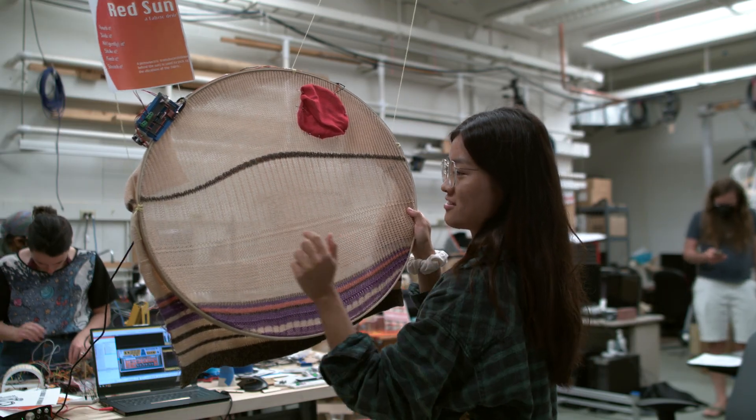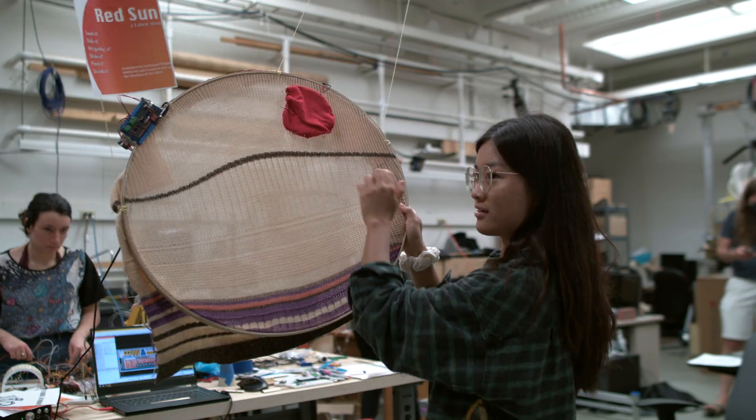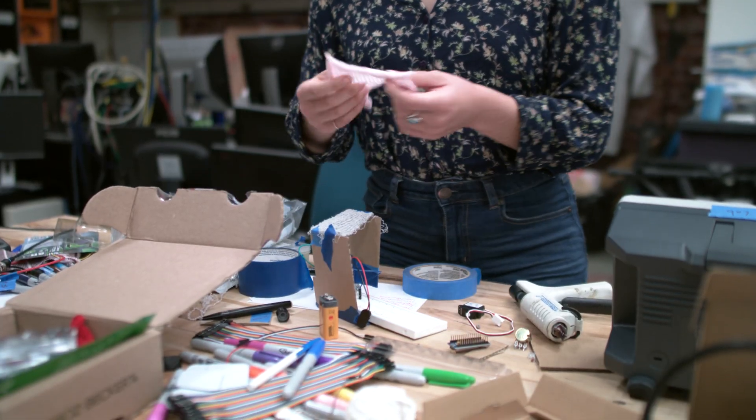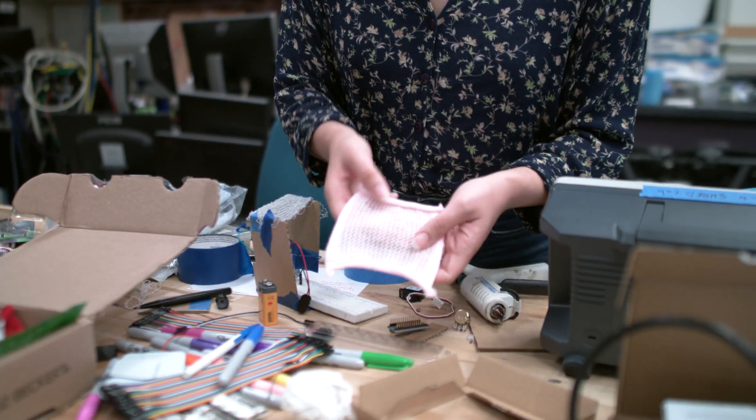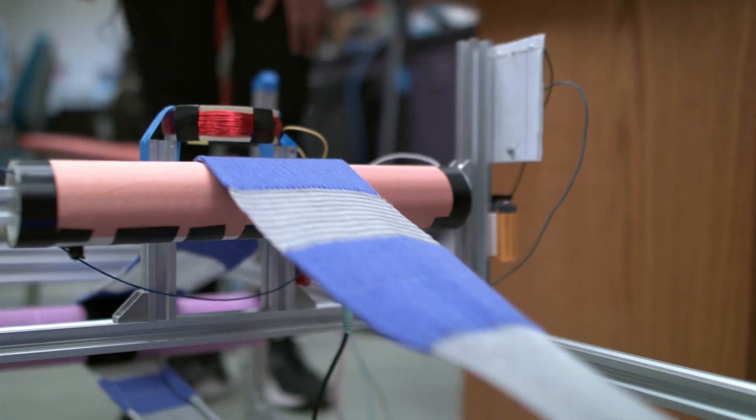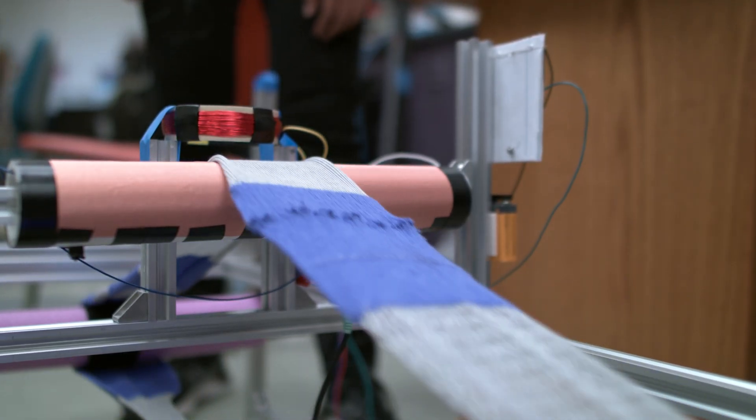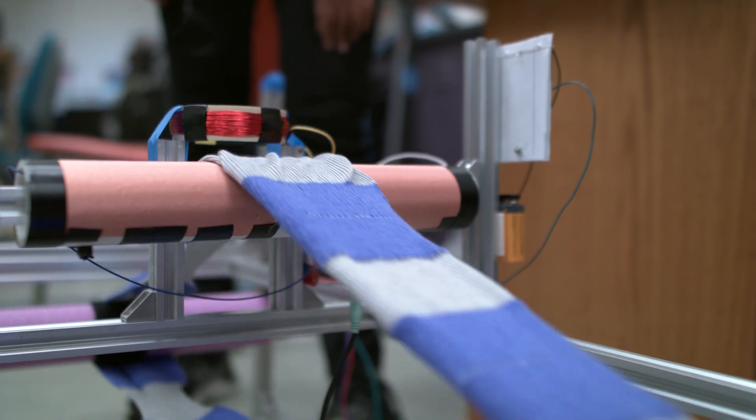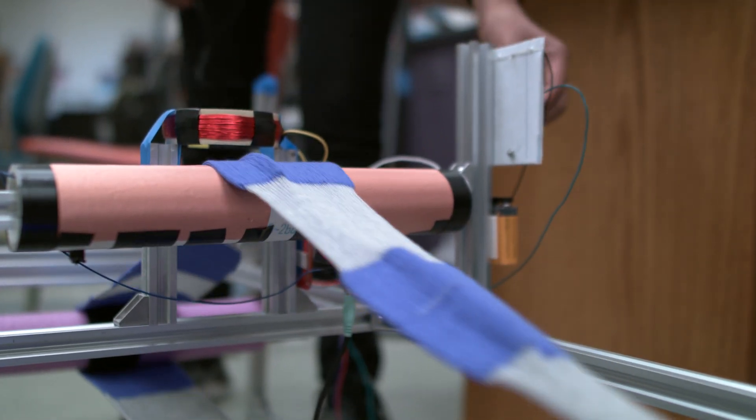The fabric drum and the fabric accordion are both using means of sensing the fabric vibration and light that don't require conductive textiles. They can use any fabric. The fabric tape loop and the resistive fabric controller both are using that resistive yarn as part of their sensing scheme.